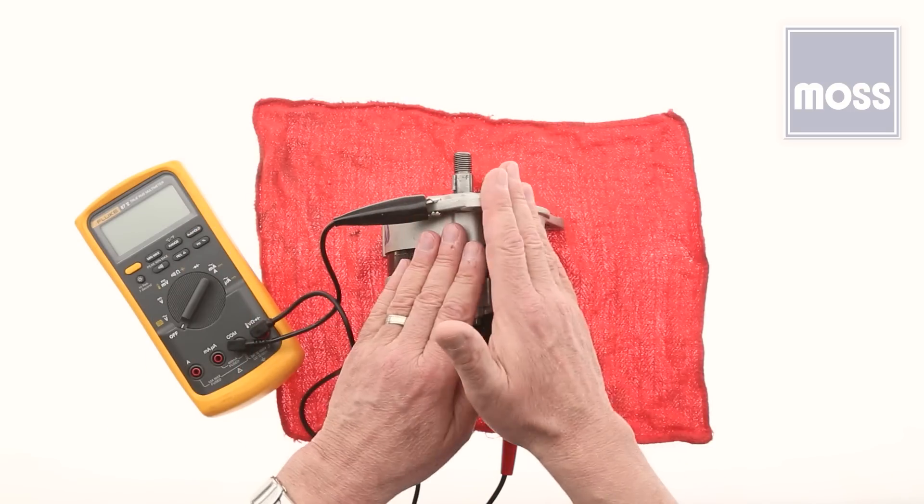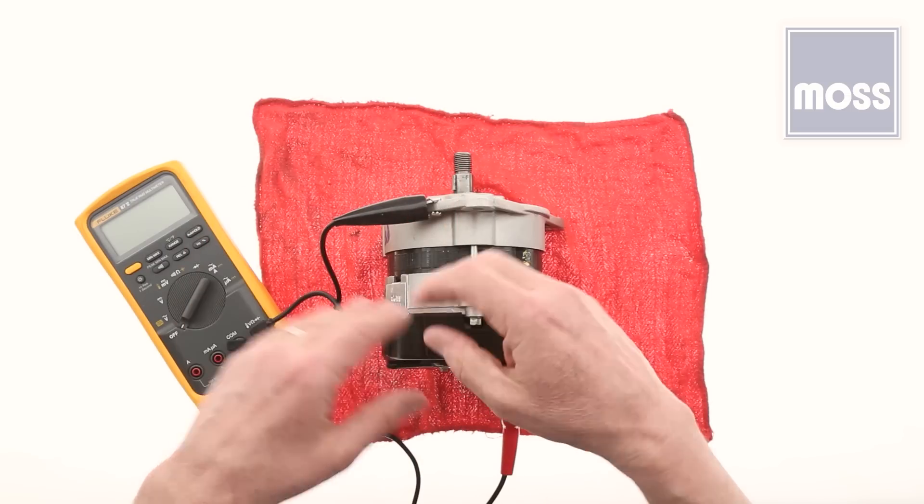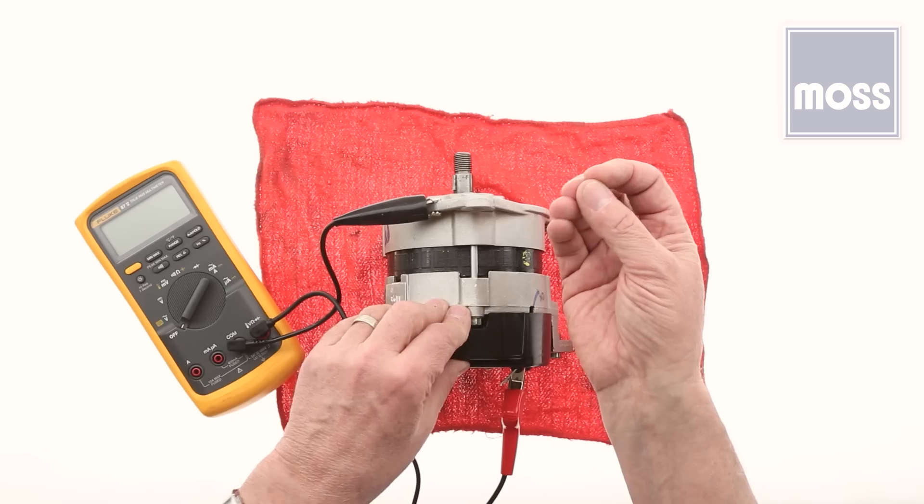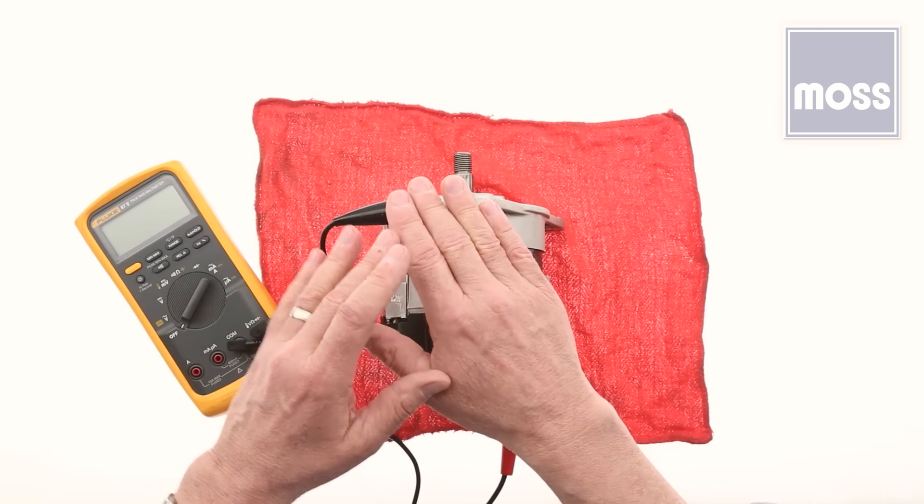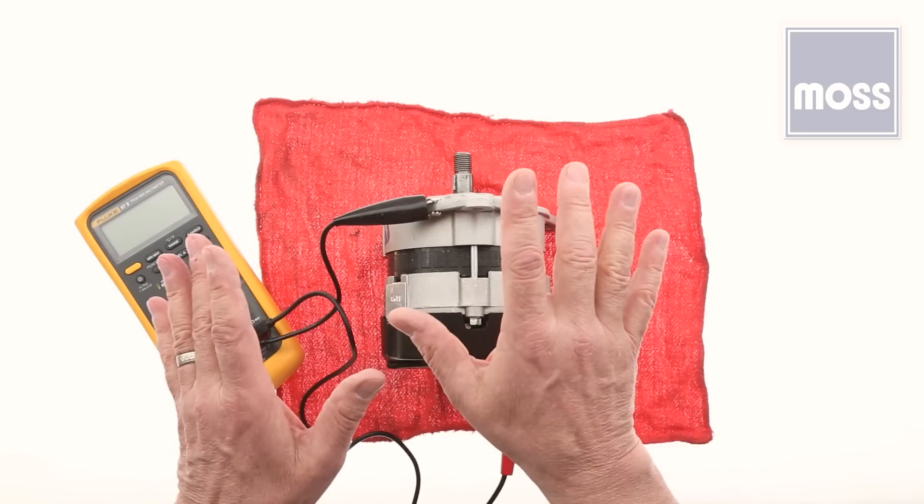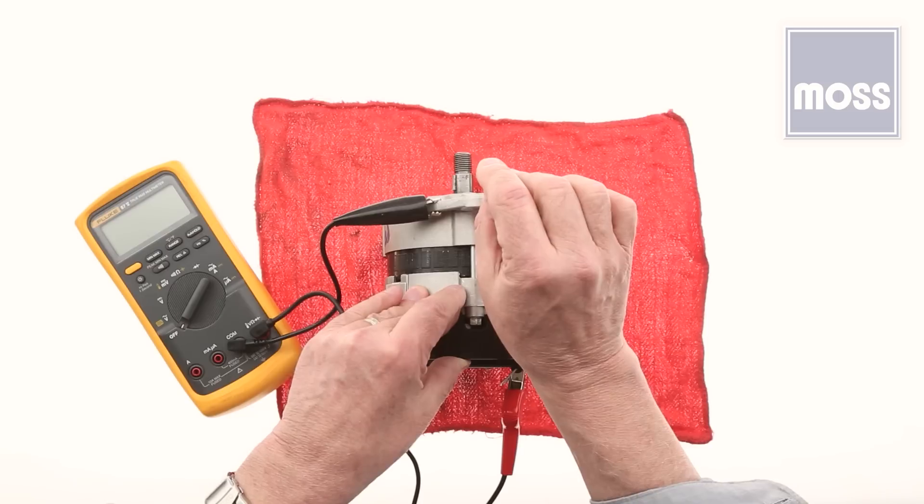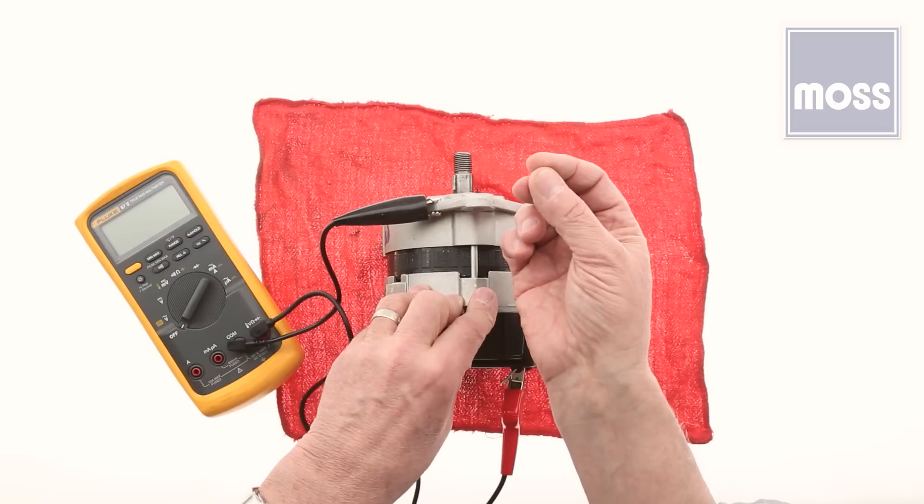For the simple alternators that our classic British cars had, anything over 0.5 volts AC or anything more than one half of one volt AC is too much. Remember though, you're probably going to see a little bit of AC irrespective. The diodes in these are not perfect, so a small amount of AC will get out. And if you've got a sensitive meter, you may see it.